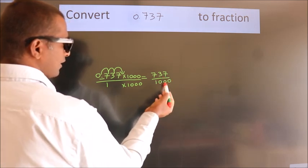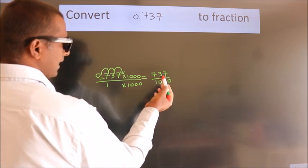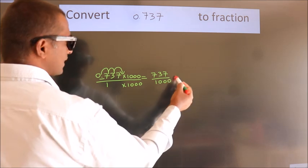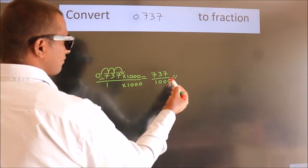This cannot be simplified any further. So this is our fraction: 737/1000.